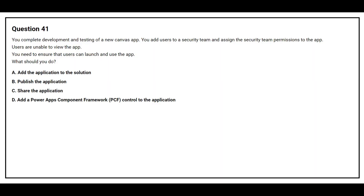Question 41: You complete development and testing of a new canvas app. You add users to a security team and assign the security team permissions to the app. Users are unable to view the app. You need to ensure that users can launch and use the app. Option A: add the application to the solution. Option B: publish the application. Option C: share the application. Option D: add the Power Apps component framework (PCF) control to the application. The correct answer is Option B: publish the application.